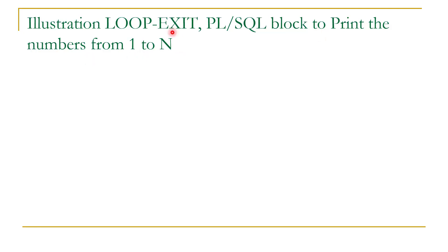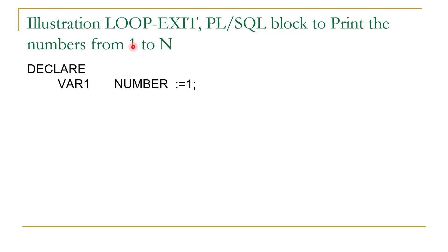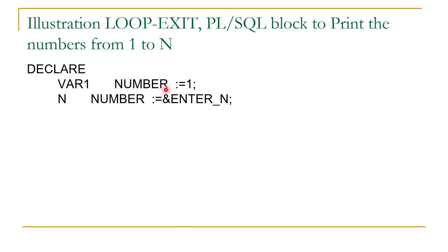Let us write a PL/SQL block to print numbers from 1 to N. We may take the value of N from the user or fix it. In the DECLARE section we declare a variable var1 of type NUMBER initialized to 1, and a terminating variable n whose value is taken from the user using a substitution variable. It is important to note that substitution variables are not allowed in Oracle Live, so we have to directly assign a value to n.